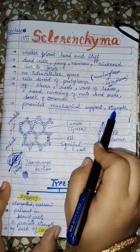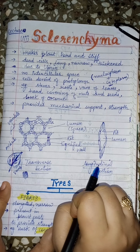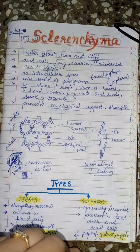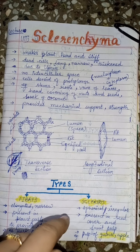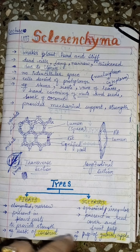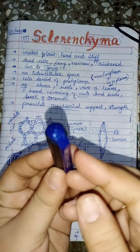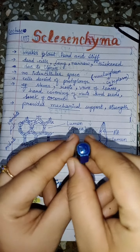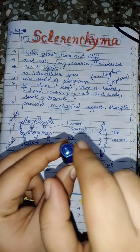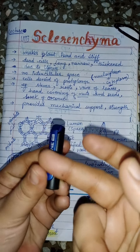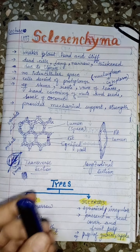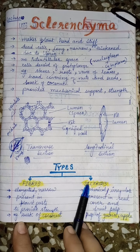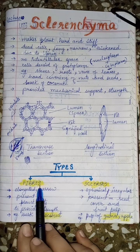Sclerenchyma provides mechanical support and strength. The NCERT mentions transverse and longitudinal sections, so let's clarify: if you have a stem and cut it horizontally like this, what you see from above is the transverse section. If you cut it lengthwise along the long side, that gives you the longitudinal section.